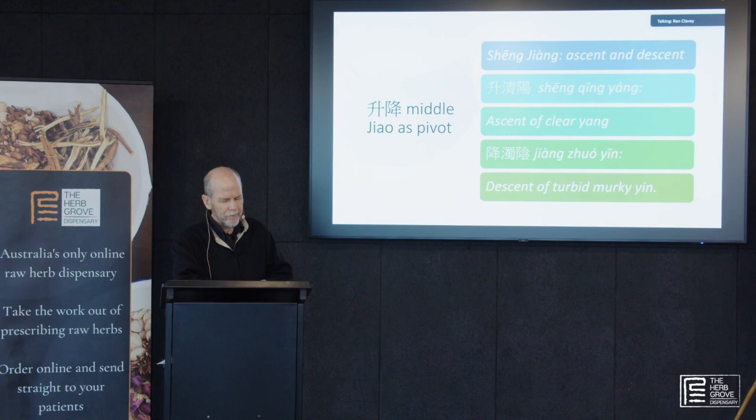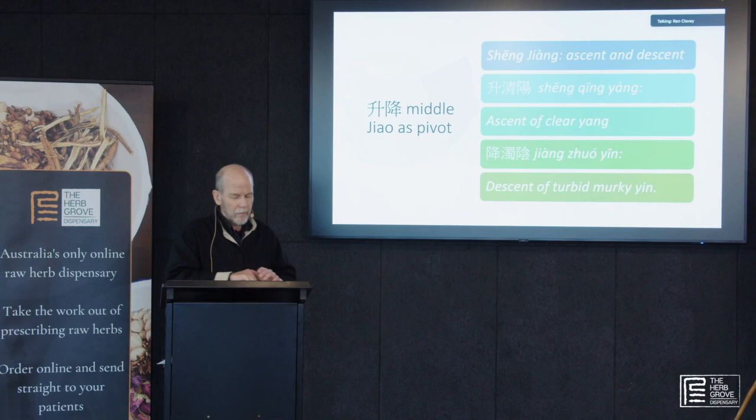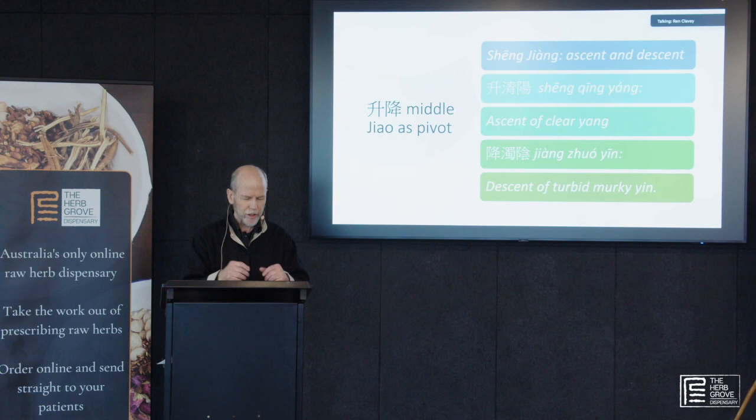The famous Shang Han Lun expert Liu Duzhou noted that Shang Han Lun experts do use other formulas sometimes. He said that the author of the Shang Han Lun, Zhang Zhongjing, liked to use treatments pivoting between opening and closing. So Taiyang opens, Yangming closes, and Xiaoyang is the pivot.